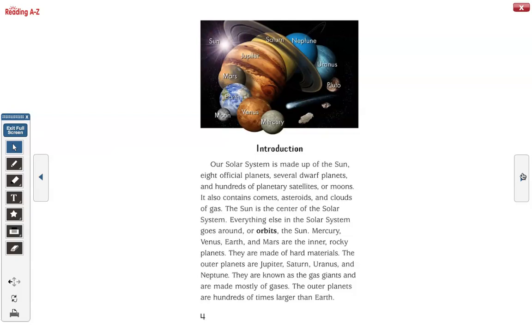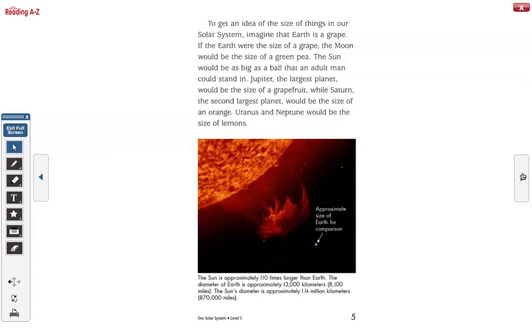Mercury, Venus, Earth, and Mars are the inner rocky planets. They are made of hard materials. The outer planets are Jupiter, Saturn, Uranus, and Neptune. They are known as the gas giants and are made mostly of gases. The outer planets are hundreds of times larger than Earth.